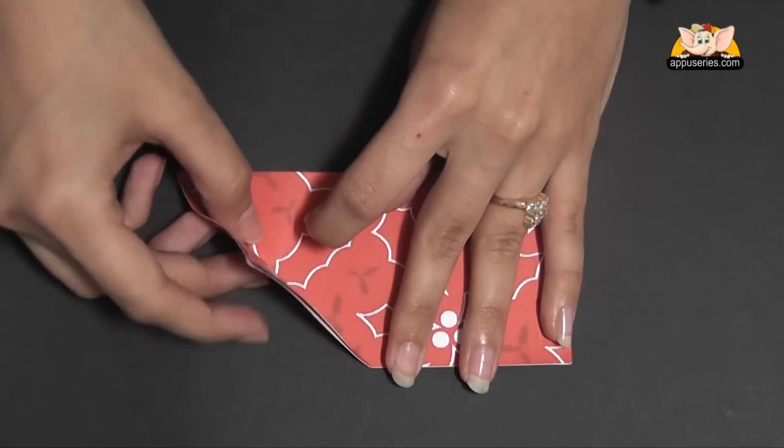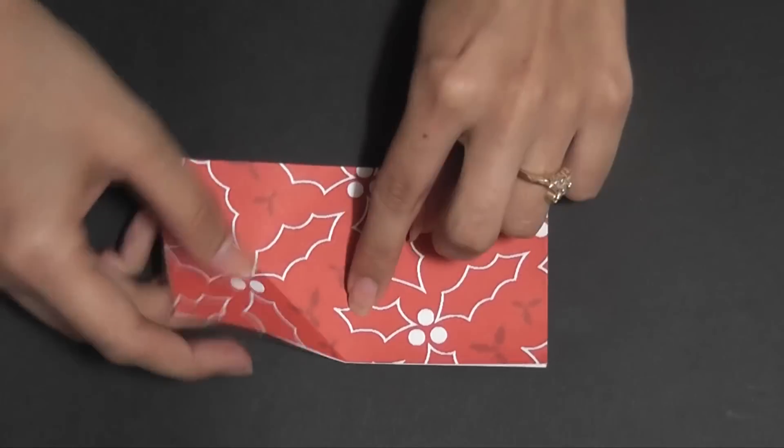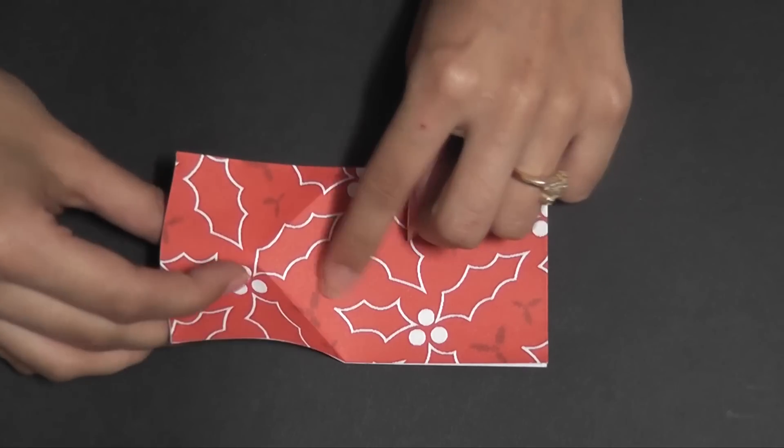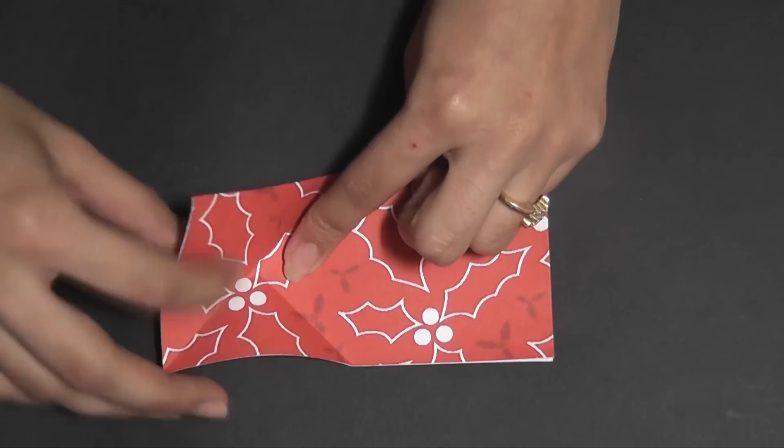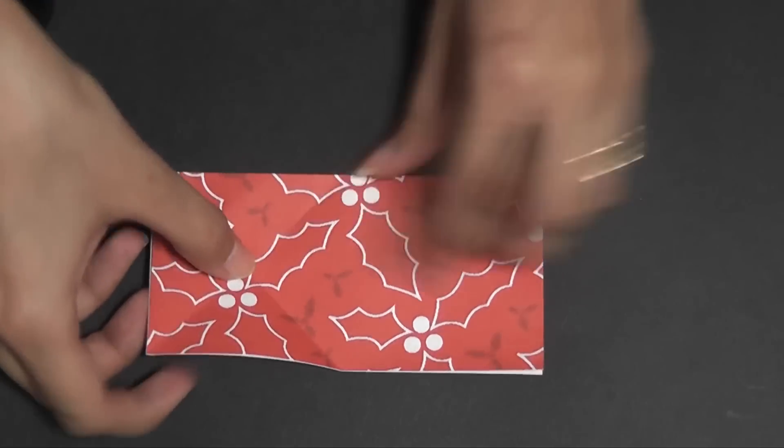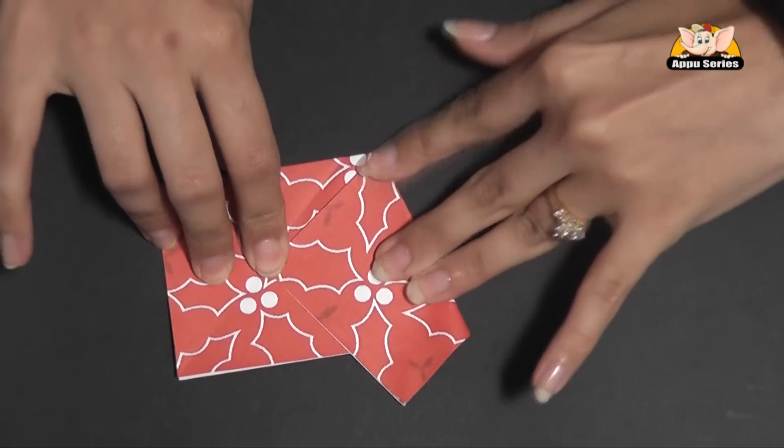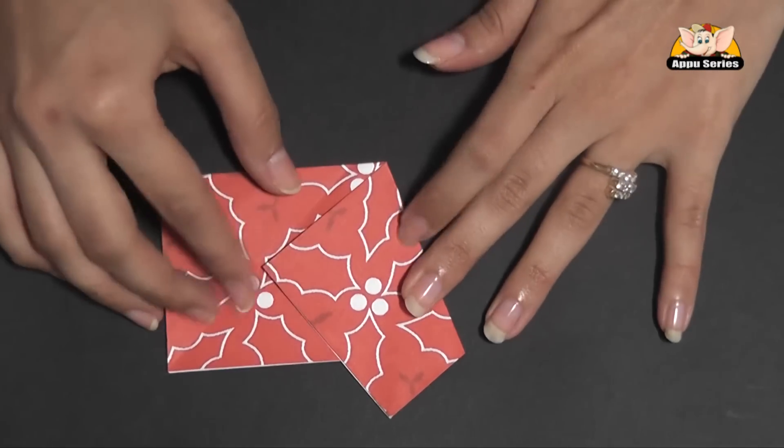So we have two creases here. The point, the intersecting point of these two creases. Now we are going to fold this corner to meet the intersecting point of these two creases.